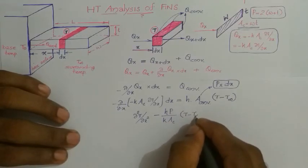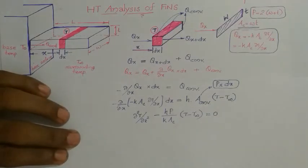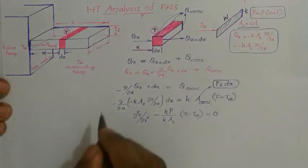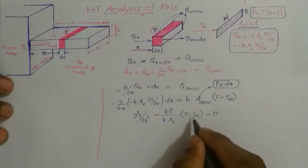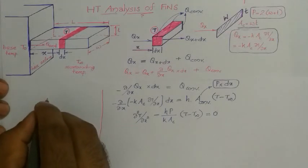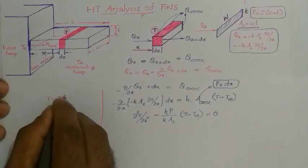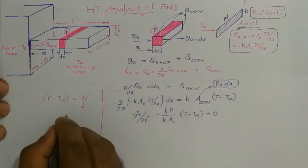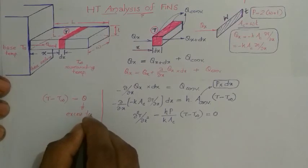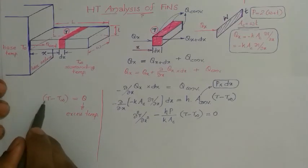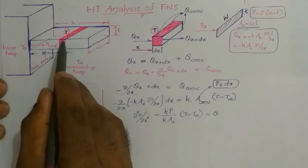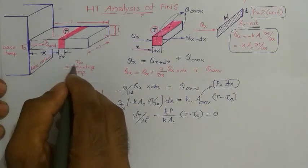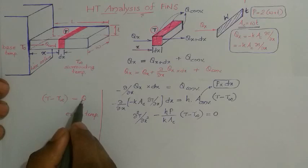After simplification, the governing equation becomes: the second partial derivative of T with respect to x squared, minus (hP divided by k times Ac) times (T minus T-infinity) equals zero. We now make a substitution where T minus T-infinity is defined as a variable called theta, known as the excess temperature. So theta equals T minus T-infinity, representing the excess temperature at any location within the fin.